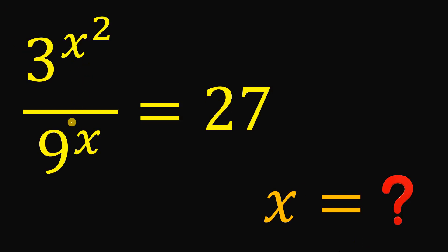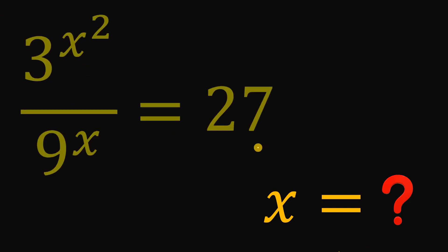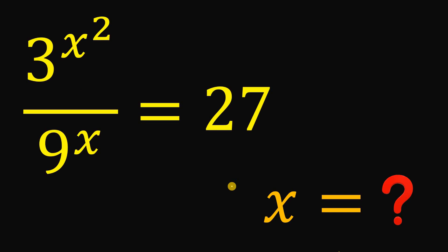Given this equation, 3x squared over 9x equals 27, our goal is to find out the values of x that satisfies this equation.